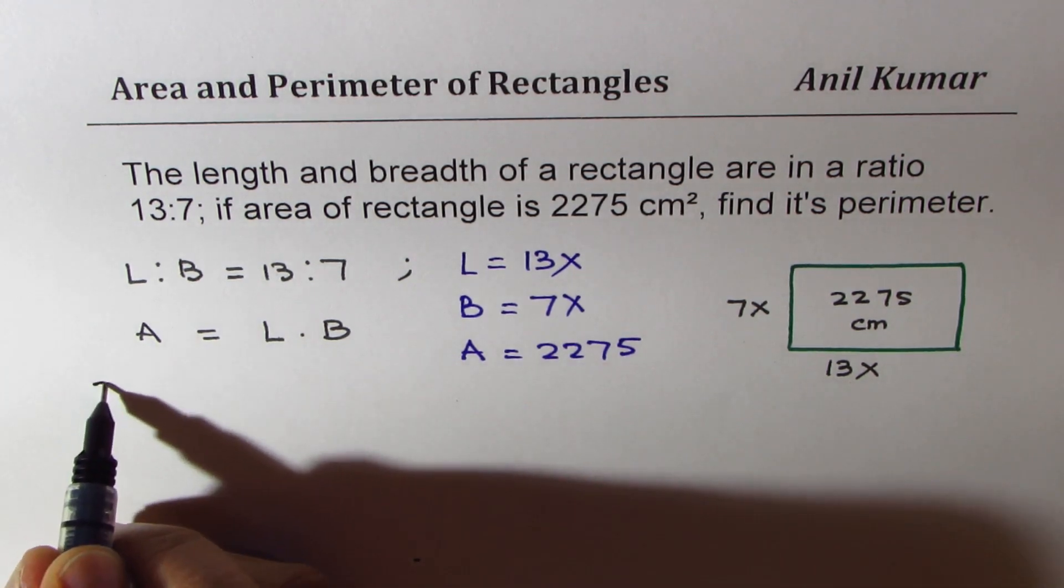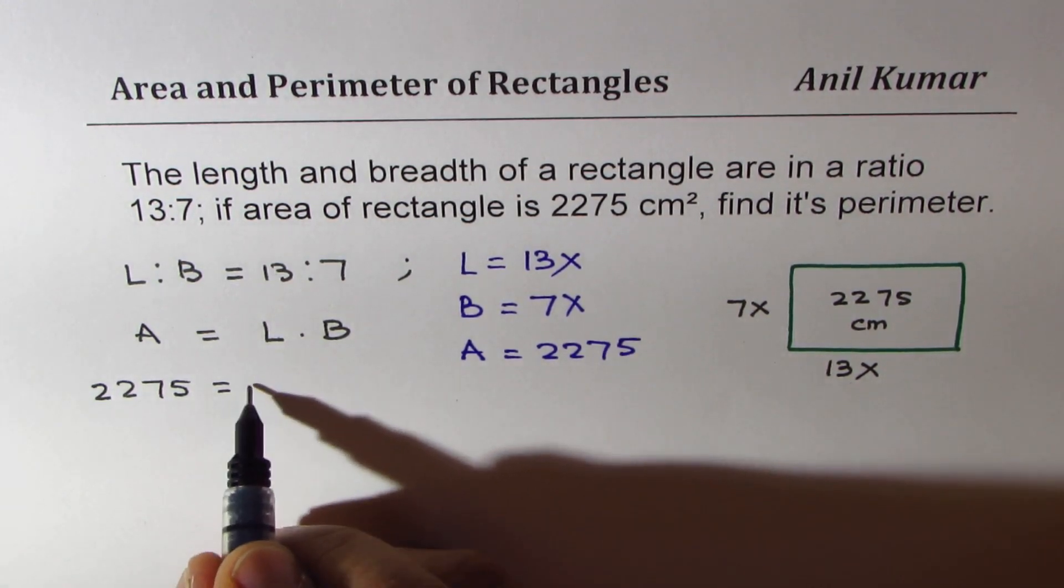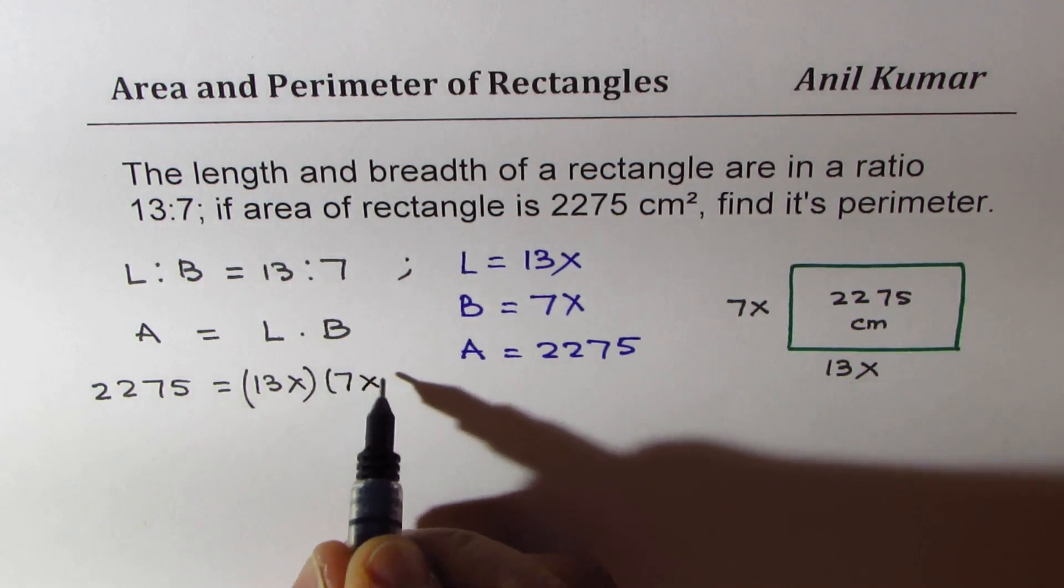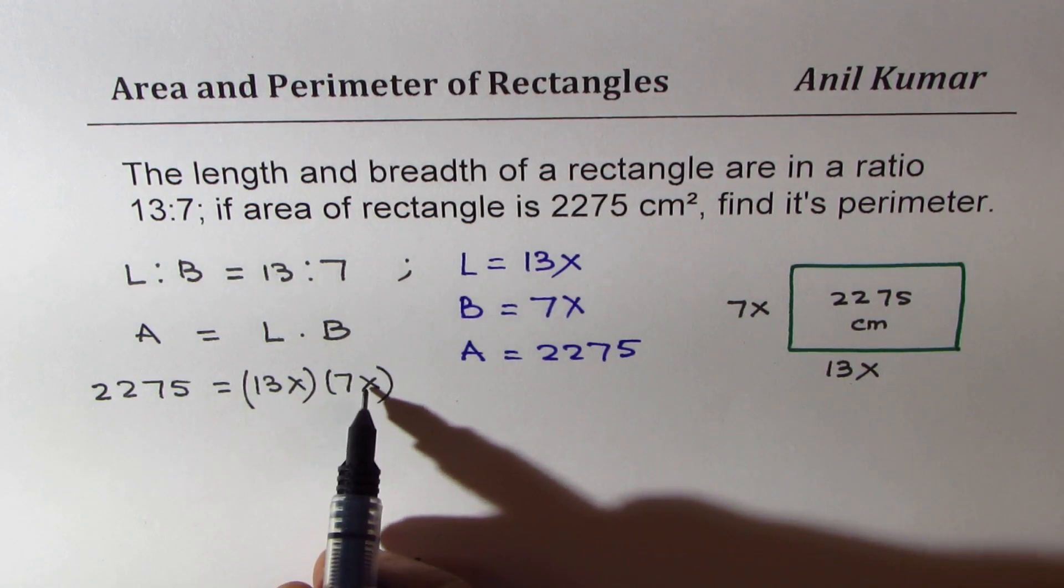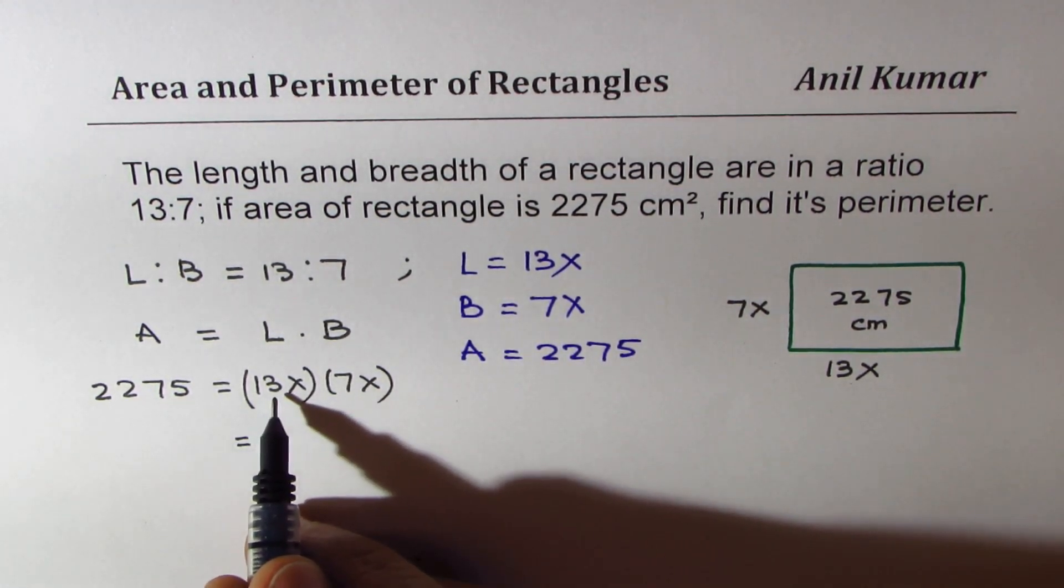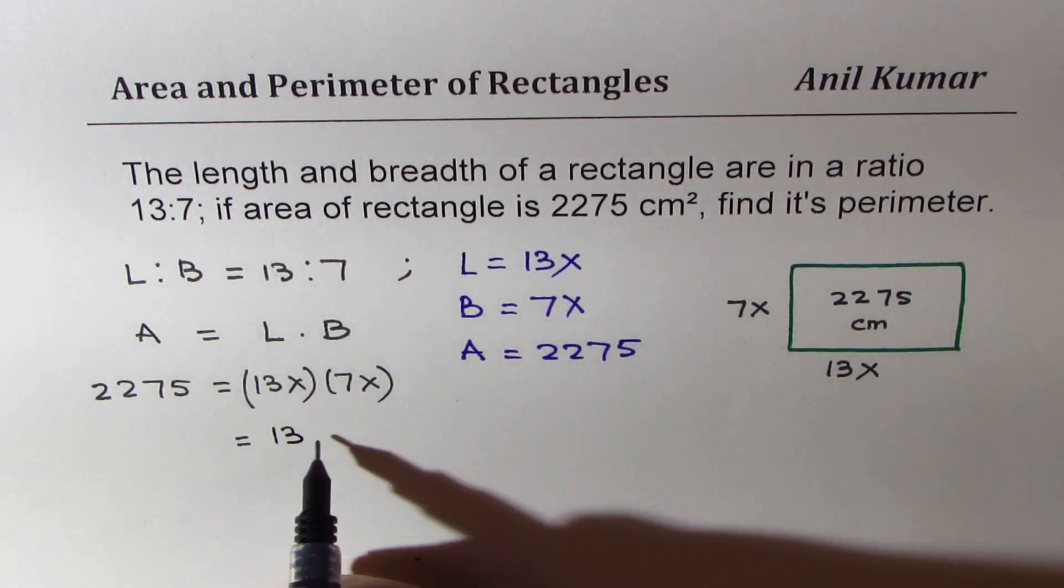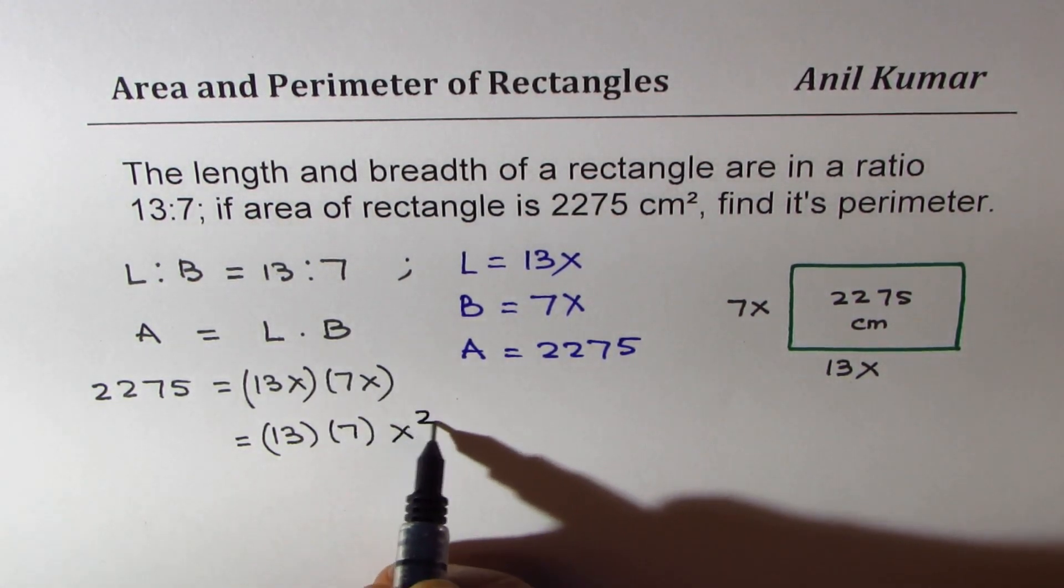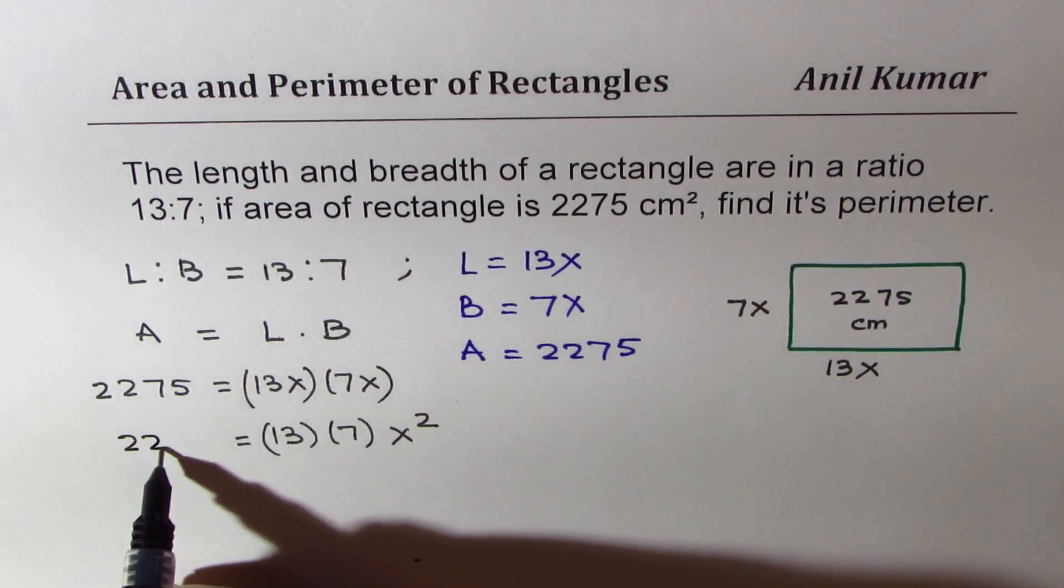So writing these values we get 2275 for area equals to 13x times 7x. So 13 times 7 and x - you could multiply now or we could divide and then multiply. That gives you 13 times 7 times x squared. When you multiply x and x you get x squared. And on this side we have 2275.